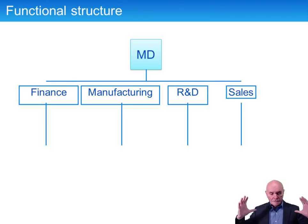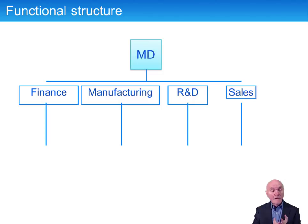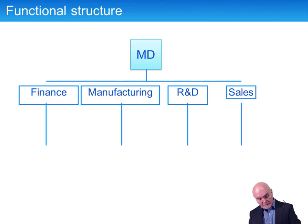If you try to run all of this together — just one sales department, one manufacturing department, one finance department — it's probably not going to work very well. Your North American division knows what the North American market wants, knows the laws and regulations, knows the competition, and gets to know customers very well. Similarly in the European and Asian markets. So once the business grows, it can become divisionalized, essentially by geography.